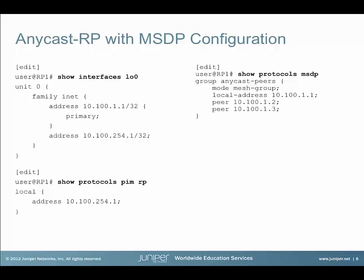Here's the configuration of one of our rendezvous points. Three steps are needed to configure Anycast RP on the rendezvous points. Step 1: configure the IP address on the loopback interface, including both the unique address of 10.100.1.1 and the Anycast address of 10.100.254.1. Step 2: configure local RP candidacy using the set protocols PIM RP local command. Step 3: enable an MSDP mesh group peering with the other Anycast RP routers. This is Anycast RP with MSDP.